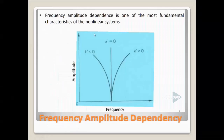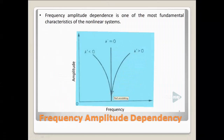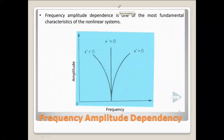From the next graph: when k' is zero the frequency is constant; when k' is greater than zero the frequency is increasing; and when k' is less than zero the frequency also changes depending on the non-linear characteristics. This illustrates the frequency-amplitude dependency in the system.